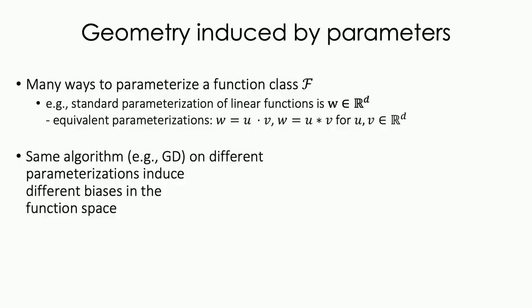So far we've looked at one type of geometry. There is yet another way we can introduce optimization geometry: through parameterization. For optimization problems over a class of functions, there are many ways to parameterize that class. For example, a D-dimensional linear function can be parameterized as a D-dimensional vector, but also as a product of two D-dimensional vectors, or a convolution between them. By changing the parameterization, we change the inherent geometry of the updates.